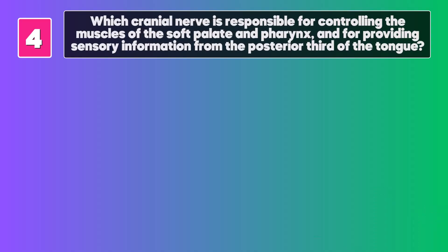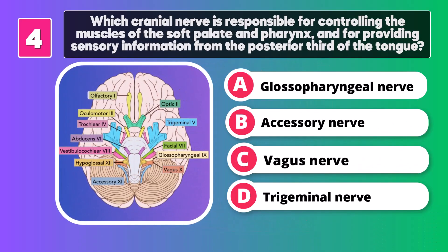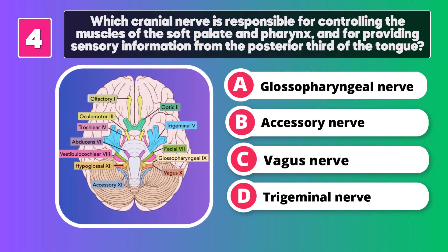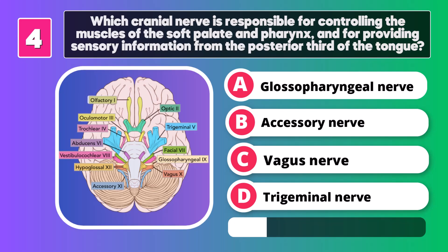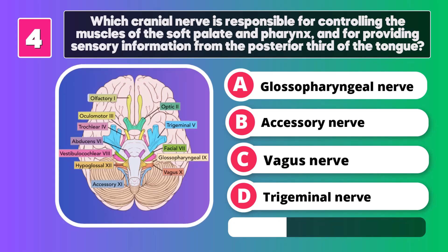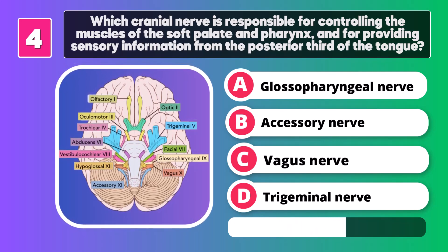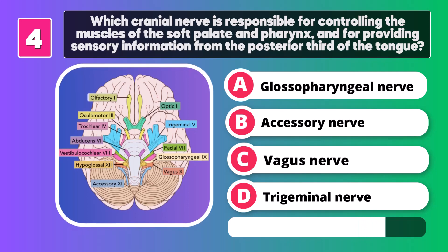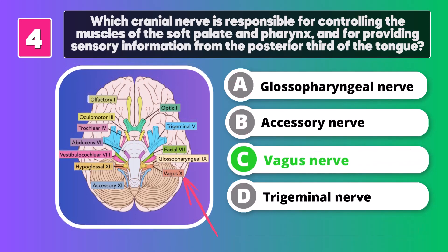Which cranial nerve is responsible for controlling the muscles of the soft palate and pharynx and for providing sensory information from the posterior third of the tongue? Vagus nerve.